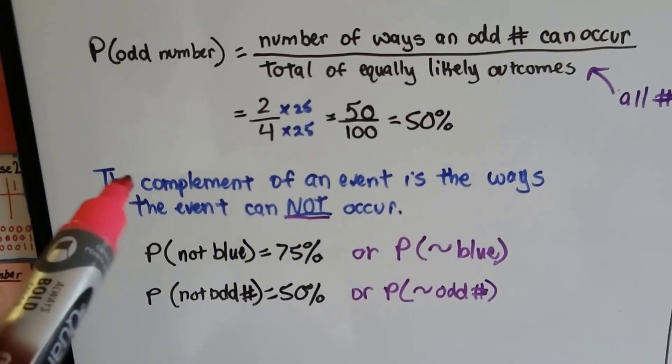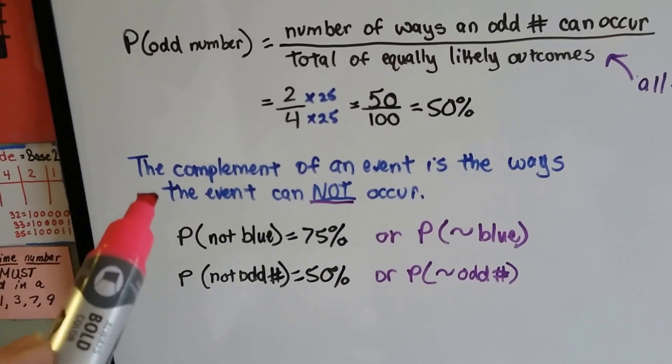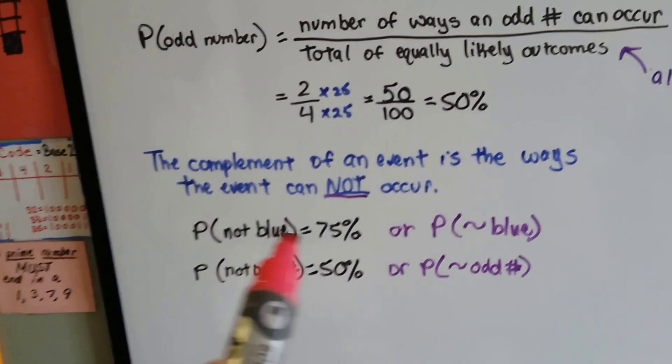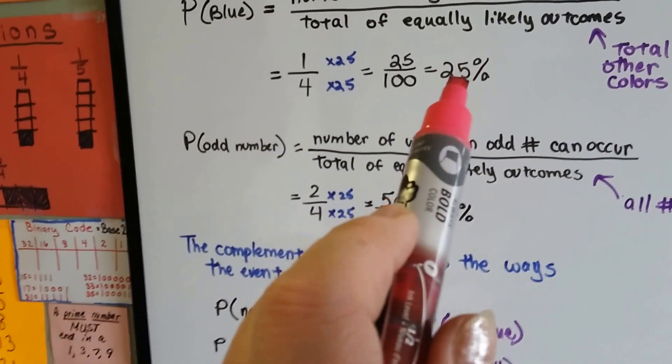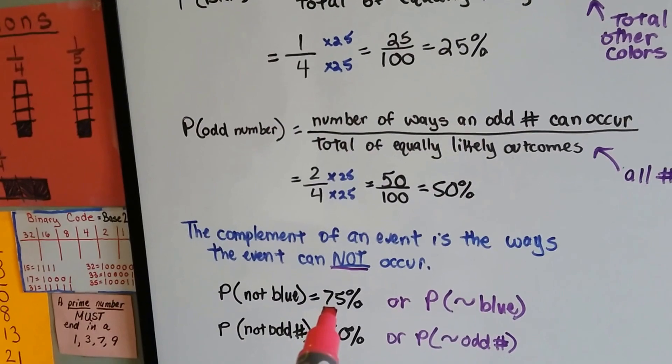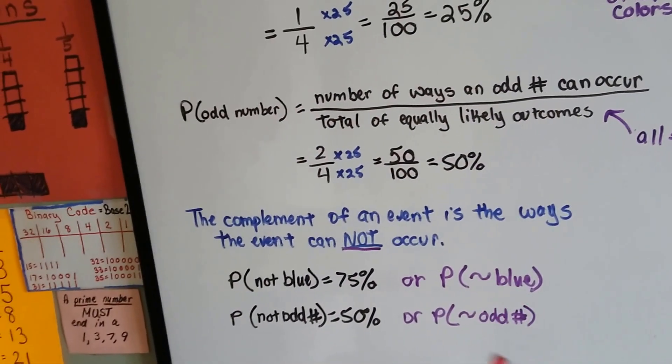I want you to remember from the previous video that the complement of an event is the ways the event cannot occur. It's the opposite of it occurring. So, out of 100% of the time it happening, if it happens 25%, the complement would be 75. And the little tilde mark means not blue.